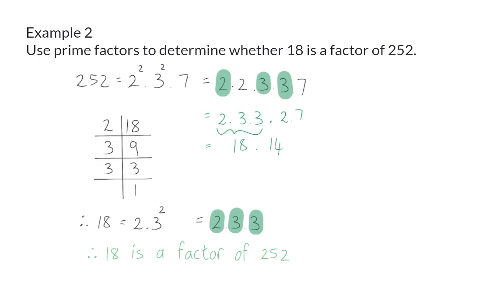Similarly, the question could have been asked in the opposite direction, and we could have said that 252 is a multiple of 18.